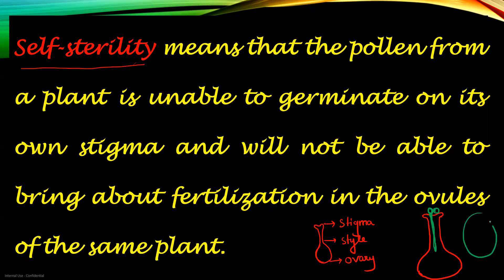In the center you have the egg cell, and in the orientation of the embryo sac you have the central cell with which one nucleus fuses to form 3N triploid endosperm. You have antipodal cells, two synergids and one egg cell. The male nucleus can only reach this egg if and only if it is compatible.